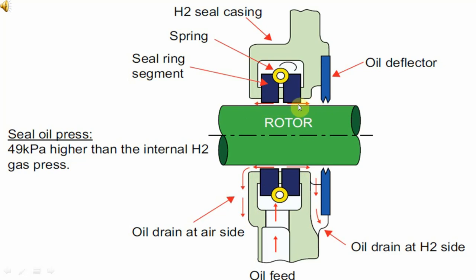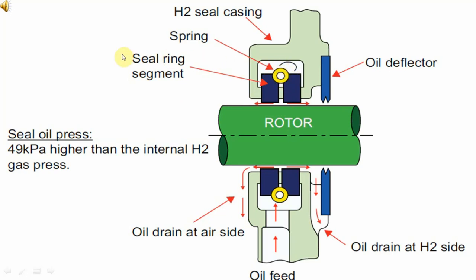This oil forms a film which is sealing the hydrogen inside the generator, and at the same time this oil film is preventing ingress of atmospheric air into the generator. We can also see the spring which is holding the seal ring segment on the rotor shaft.